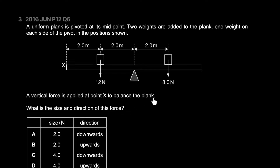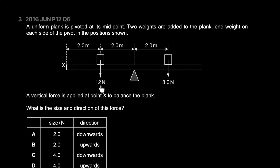A vertical force is applied at point X to balance this plank. At the pivot, two meters to the right there's an 8 newton force, and to the left there's a 12 newton force. The applied force must be upwards, because without it the plank would fall toward the left — the distance is the same but the force is greater on that side. Now we need to figure out if it's 4 newtons or 2 newtons.